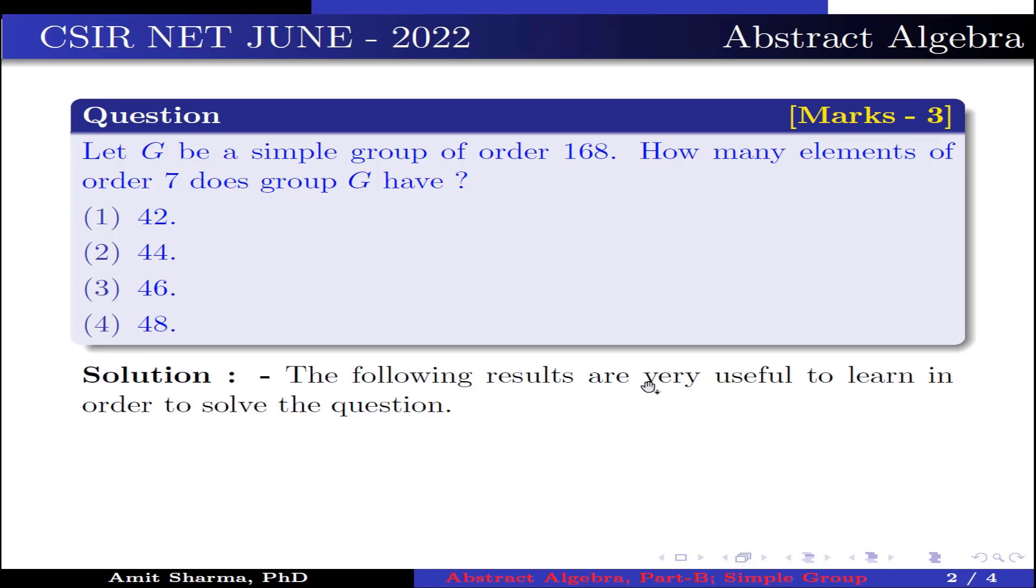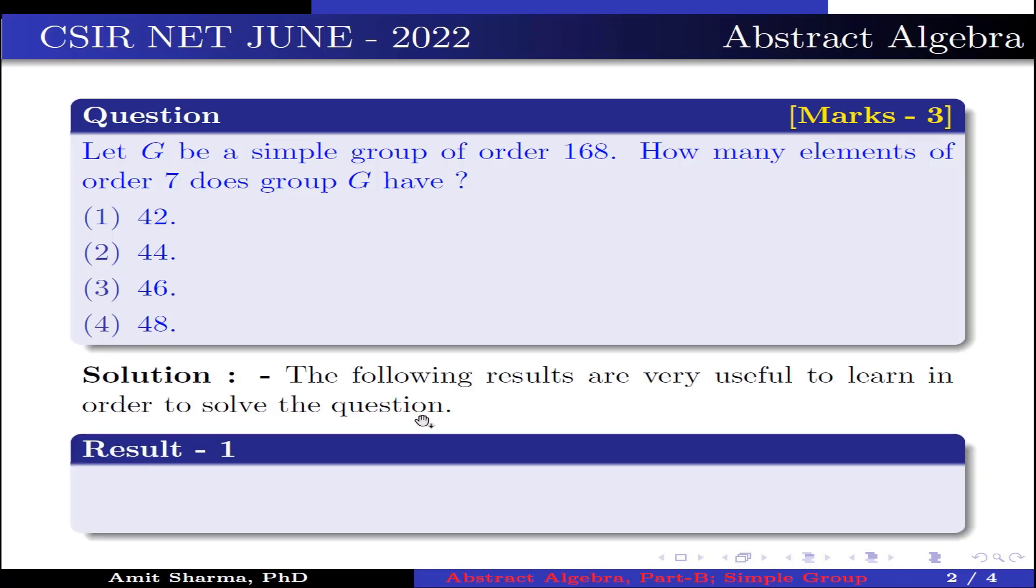The following results are very useful to learn in order to solve the question. Result number 1: A group G is said to be simple if G has exactly two normal subgroups, namely identity and G itself, or you can say a group which is simple does not have any proper normal subgroup.